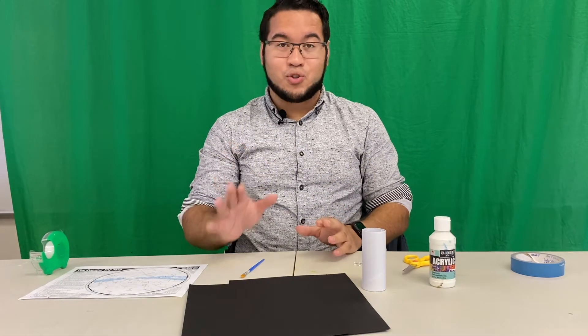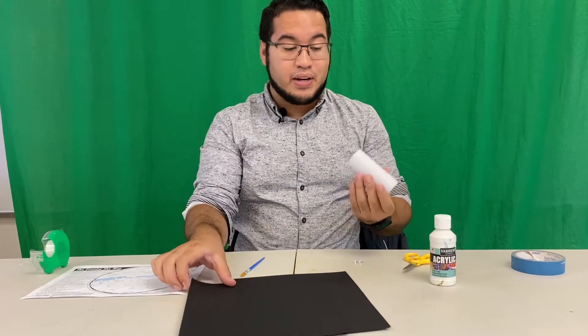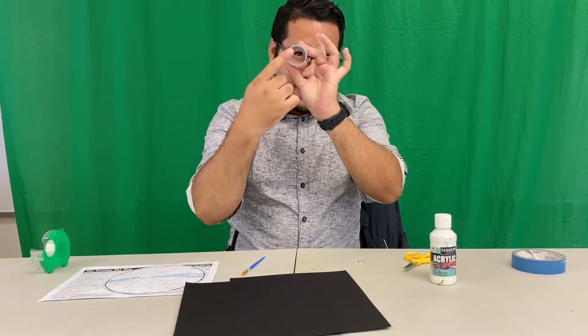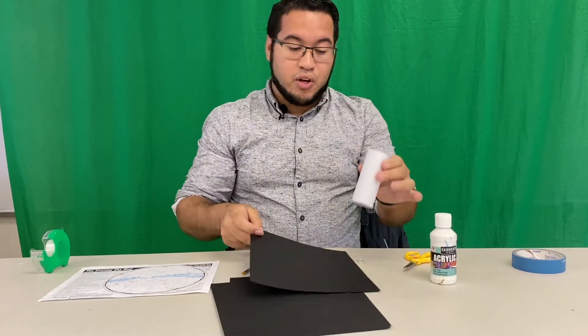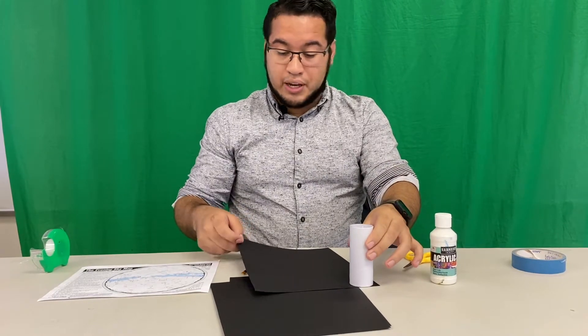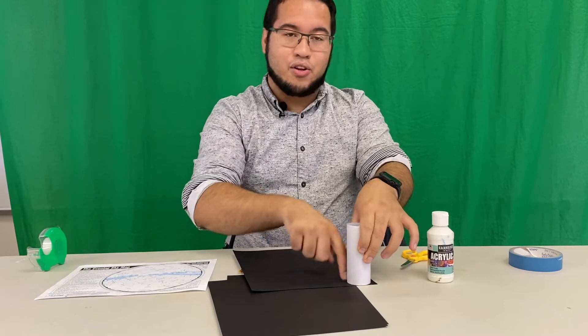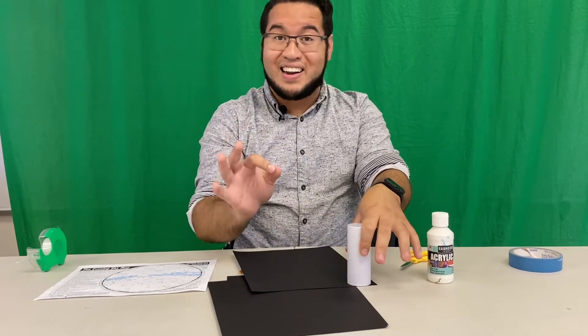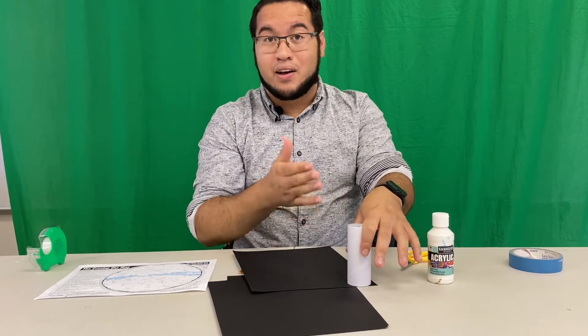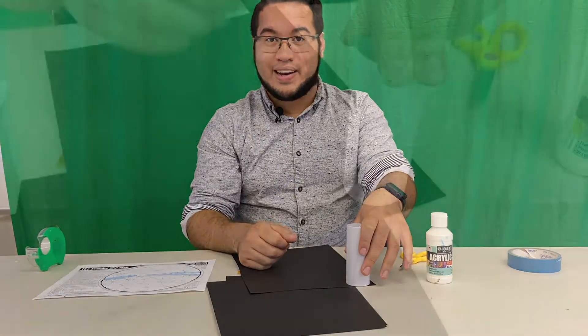Now the first thing you want to do is make sure that the size of the paper that you end up cutting will fit around the end of our paper tube here. So what you'll do is using a pencil, a pen or anything, just take your paper tube and draw a little circle and then cut out that circle. That way we can tape it onto the end. So I'm going to go ahead and do that now.